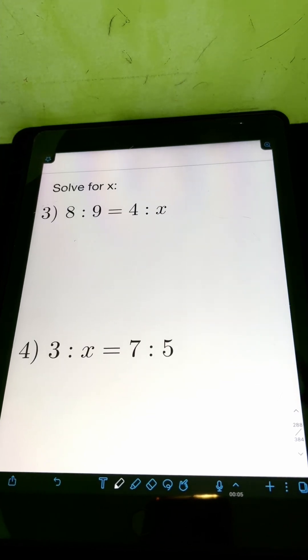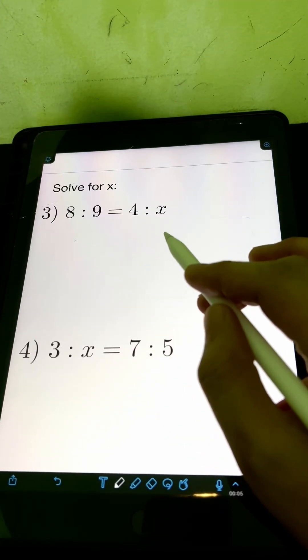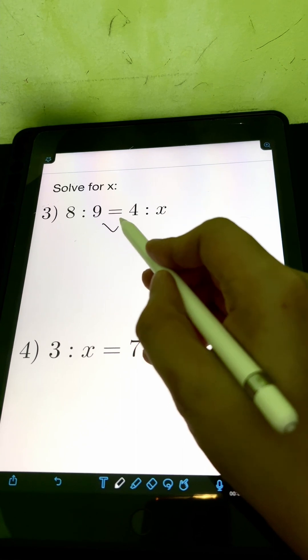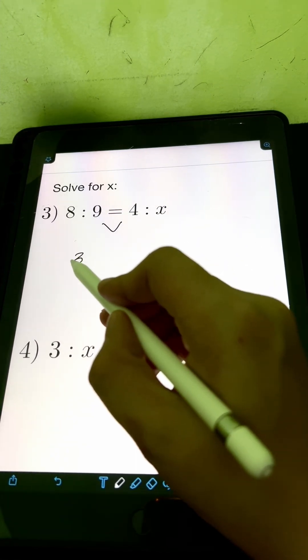Next, for number 3, we have 8 is to 9 is equal to 4 is to x. Again, let us multiply the means, 9 times 4, that's 36,